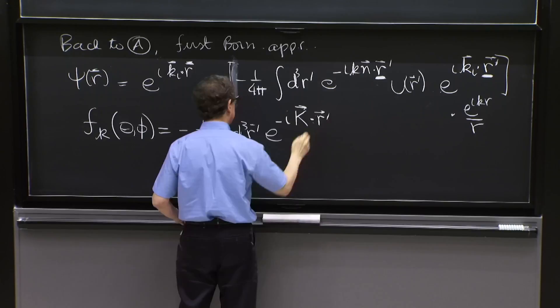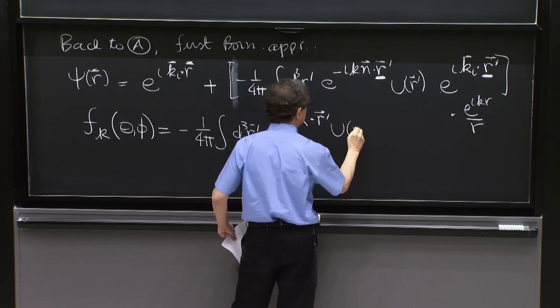So it's a difference of exponents. And we will call it e to the minus i capital K vector dot r prime, u of r prime.